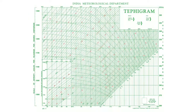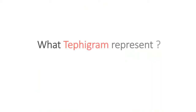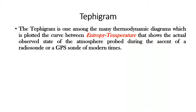Hello friends, today we see a new topic: the tephigram. What is meant by tephigram, and what does it represent? The tephigram is one among the many thermodynamic diagrams, which plots a curve between entropy and temperature. It shows the actual observed state of the atmosphere probed during the ascent of a radiosonde or a GPS sonde of modern times.